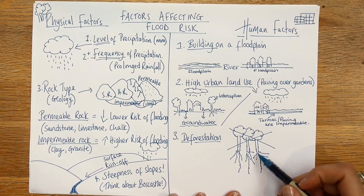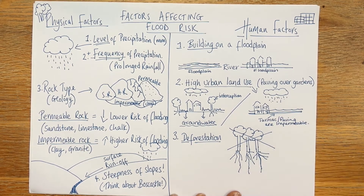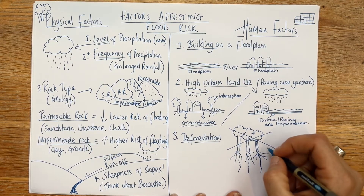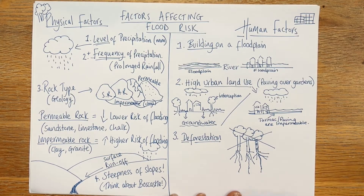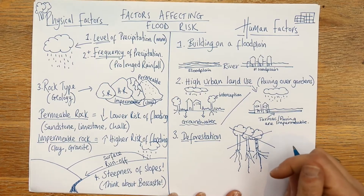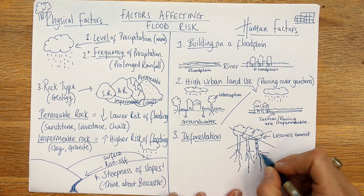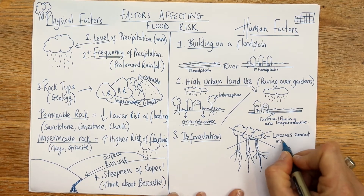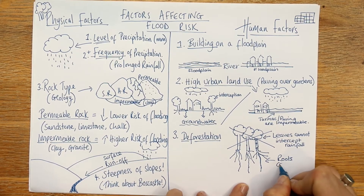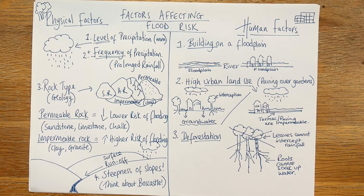Trees intercept rainfall and they drink a lot of it. They soak water up from the ground and hold it in their trunks. If you used a stethoscope you'd hear water moving up the trunk — it's like drinking from a straw. Trees drink litres and litres of water, so they're amazing for storing it. When you deforest, the leaves cannot intercept rainfall and roots cannot soak up the water. We just need more trees, basically.